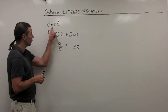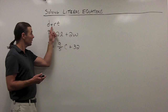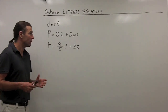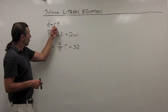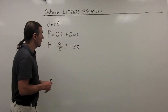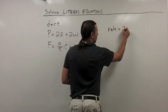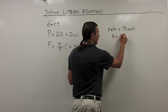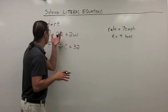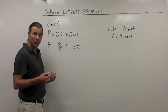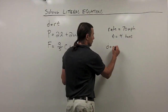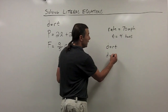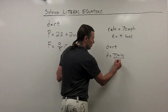Notice all of these formulas — if we were trying to solve for one of the variables, we would be solving a literal equation because there's more than one variable. Let's take a look at this first distance equals rate times time formula and see how we use it. Say we're going on a trip and we know the rate is 70 miles per hour and we're going to drive for four hours.